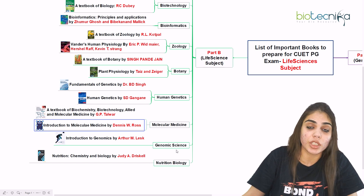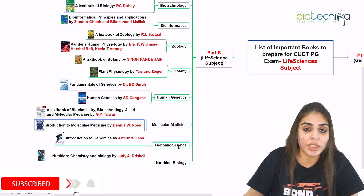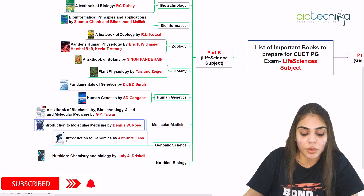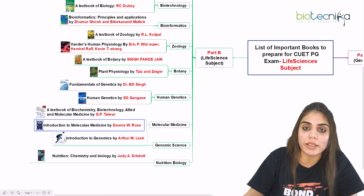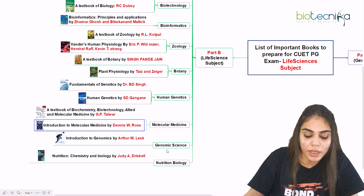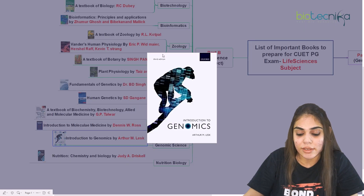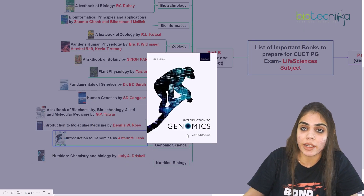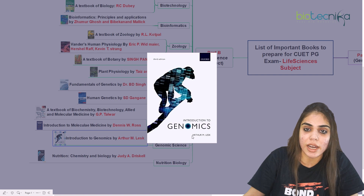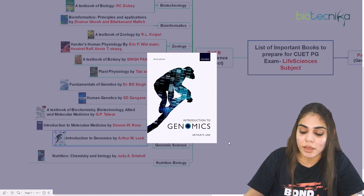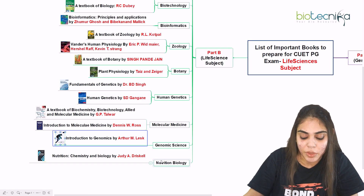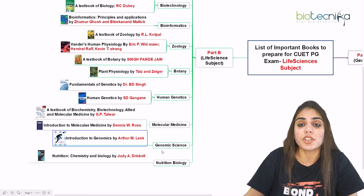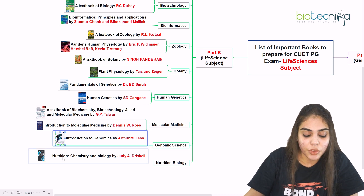For genomic science, where you need to prepare about genomics, including DNA and everything about it, you can go for Introduction to Genomics by Arthur Lesk. You will get all things about genomics in a very simple format. You can see the cover page for this book, so download it and start preparing for the genomic science subject for the CUET PG Life Sciences exam.